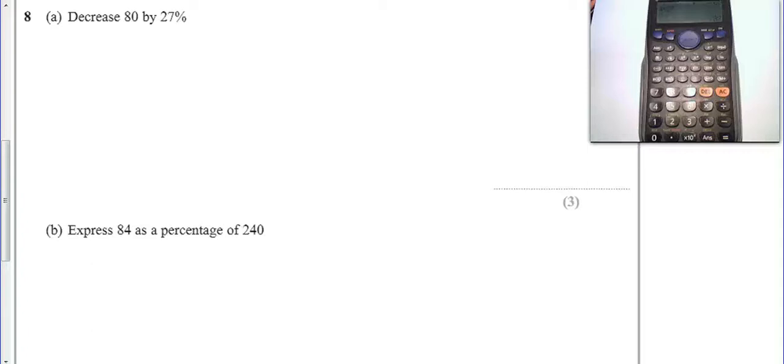Okay, decrease 80 by 27%. So there's a couple of ways of doing this using my calculator. I'll do the first one in blue. So I could do 80 times 0.27. That is going to give me 27%.